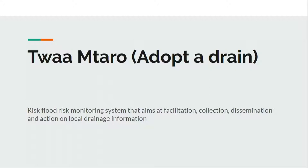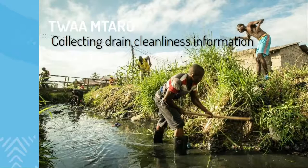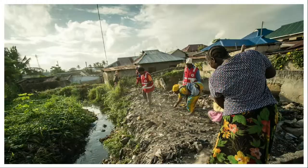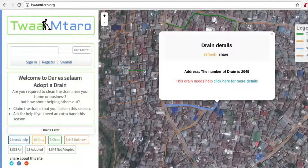Based on that, the idea of Tuamtaro, or Adopted Drain, was born. Tuamtaro is a flood risk monitoring system that aims at facilitating collection, dissemination, and action on local drainage information. Local people in the streets are doing cleanliness, but we need a way to centralize that data at one place so others can easily see. People are doing cleanliness in different places across Dar es Salaam city, and we collect that data and put it on one platform.